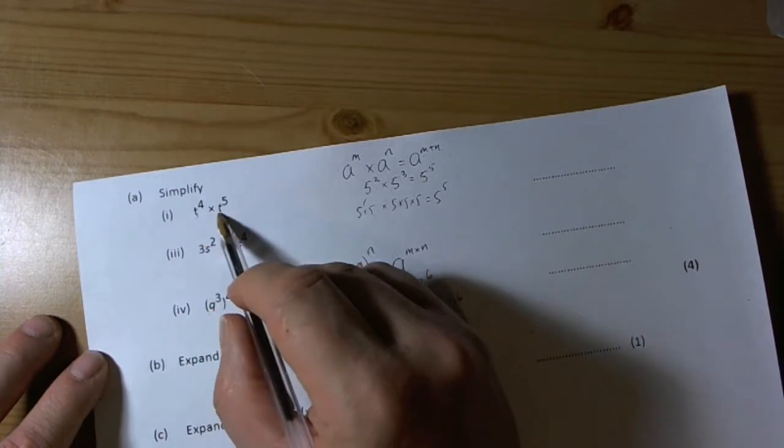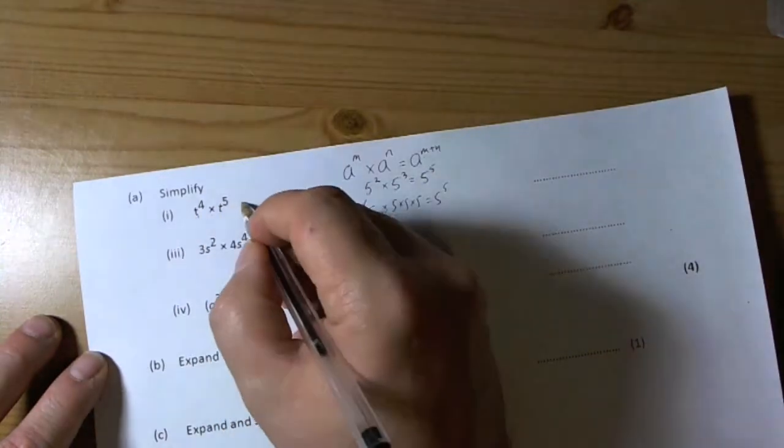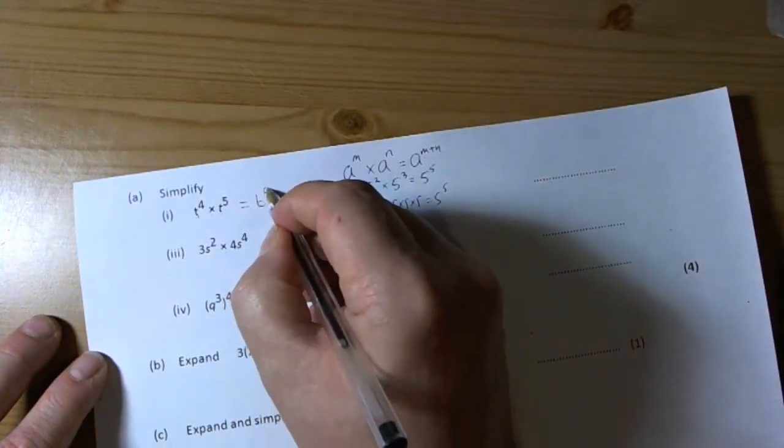So we've got here 2 to the power of 4 times 2 to the power of 5. Add the two powers, then we end up with 2 to the power of 9.